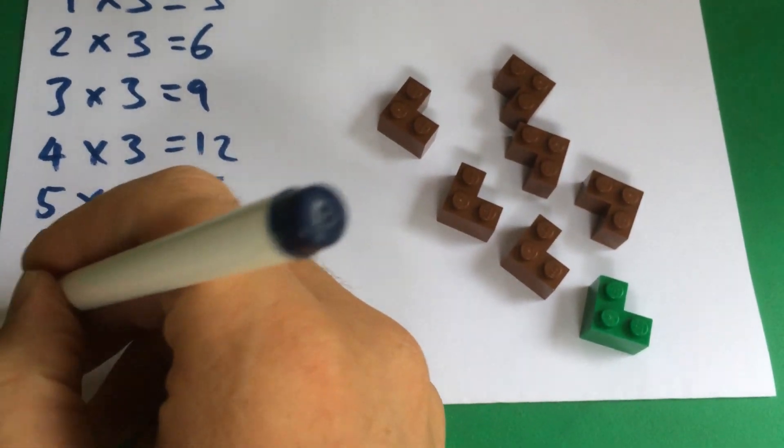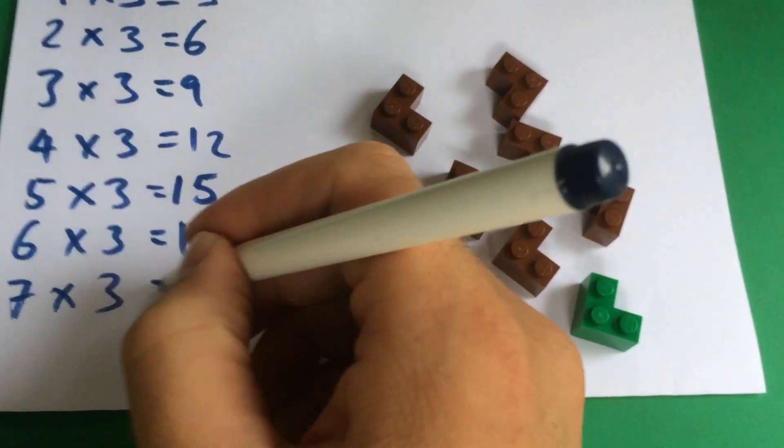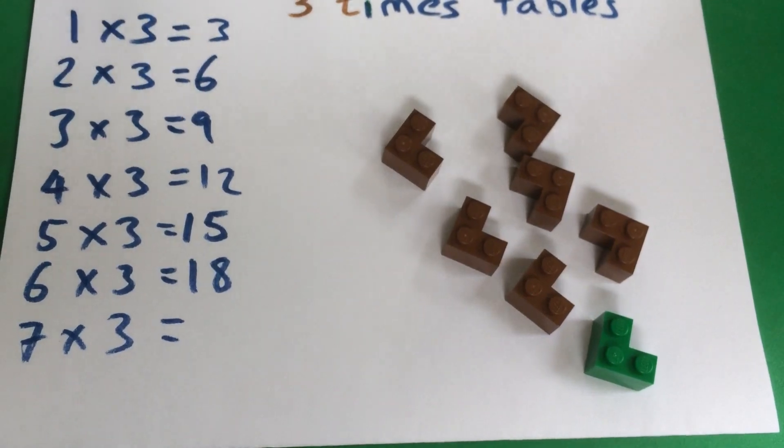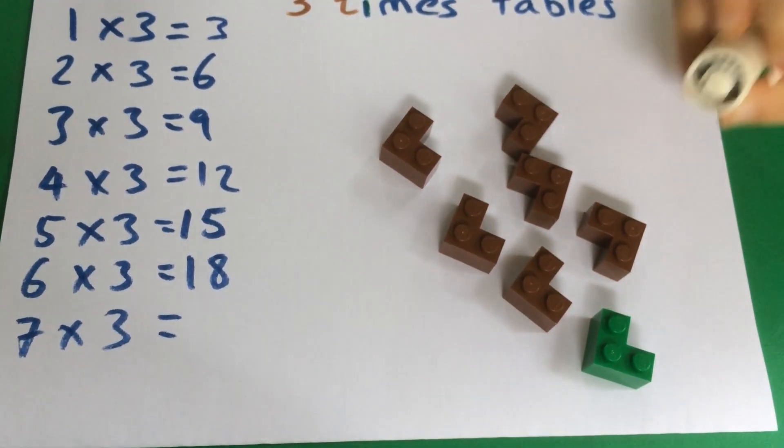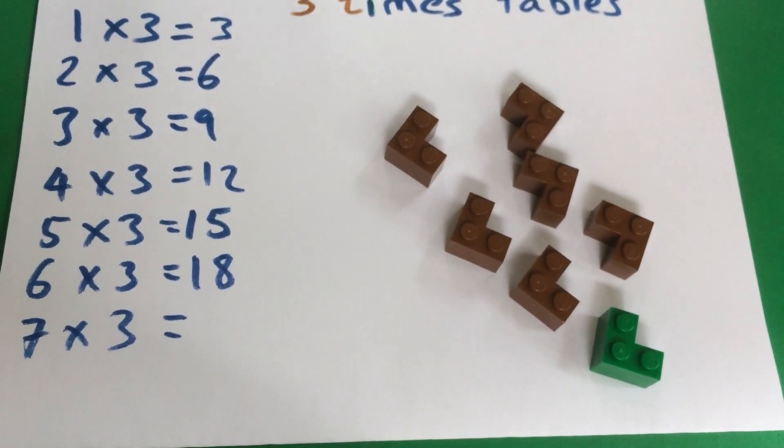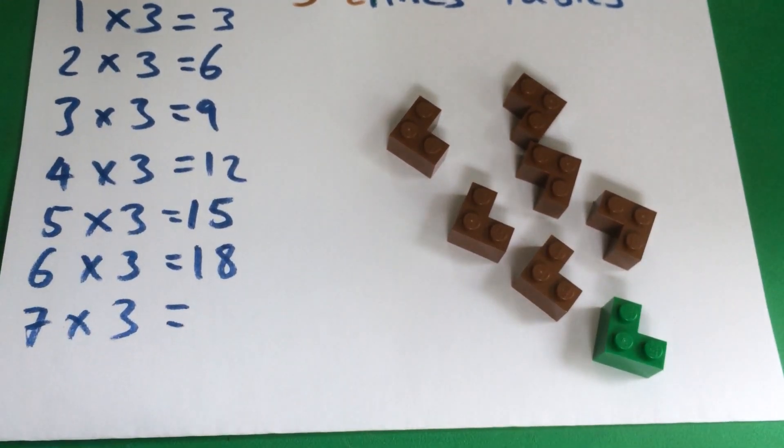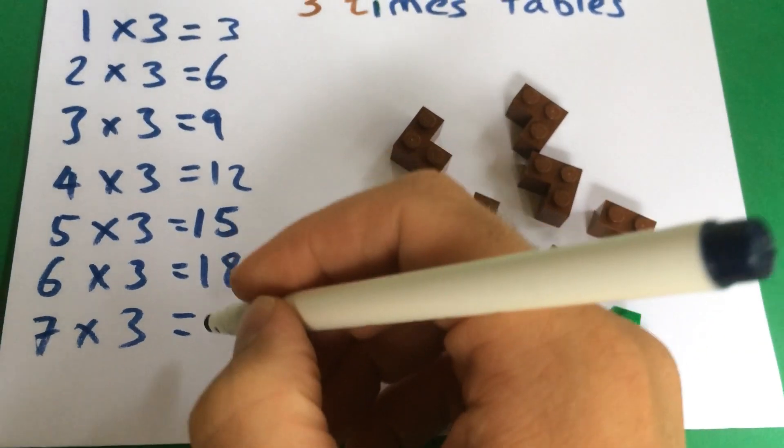Seven lots of three. How many dots have I got now? How many studs? 1, 2, 3, 4, 5, 6, 7, 8, 9, 11, 12, 13, 14, 15, 16, 17, 18, 19, 20, 21. 21, well done.